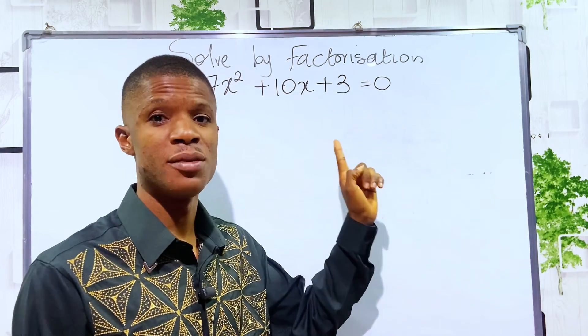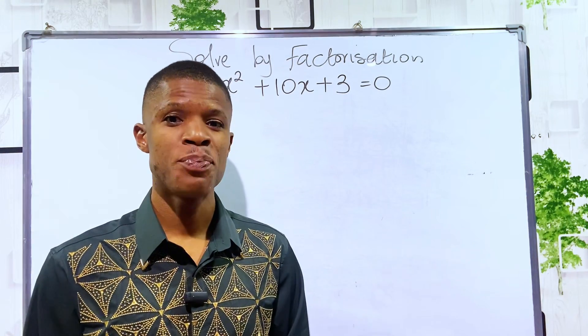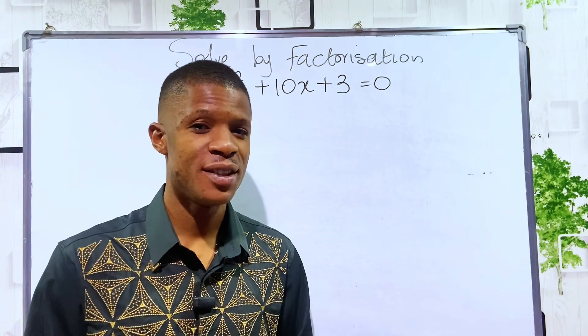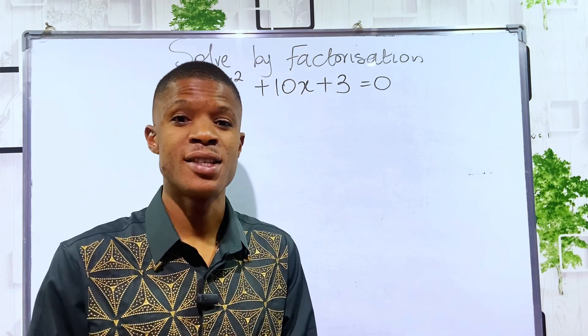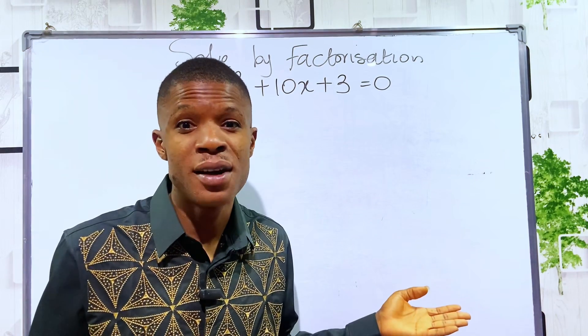Can you solve a quadratic equation by factorization method? If you think you can, pause the video and make a guess. We have 7x squared plus 10x plus 3 equals 0. What are the values of x?